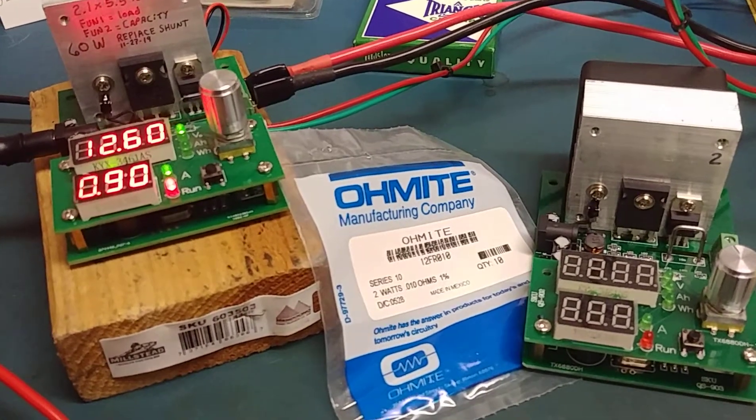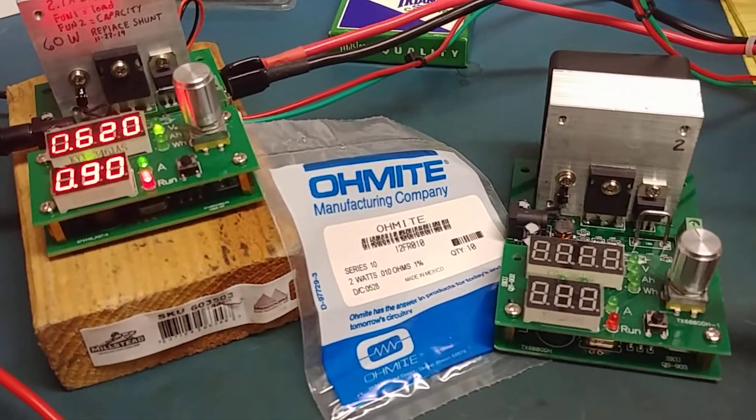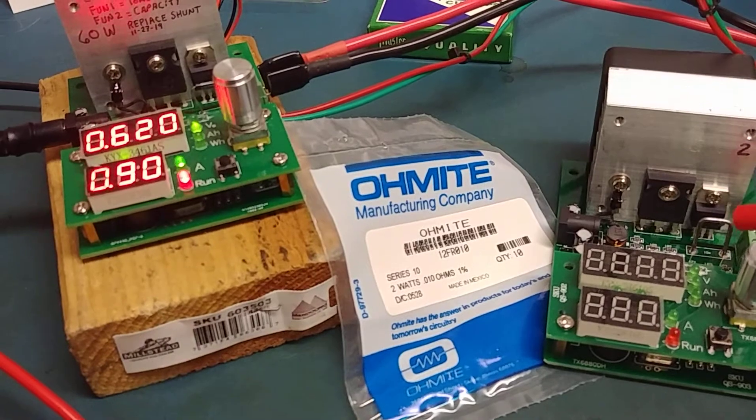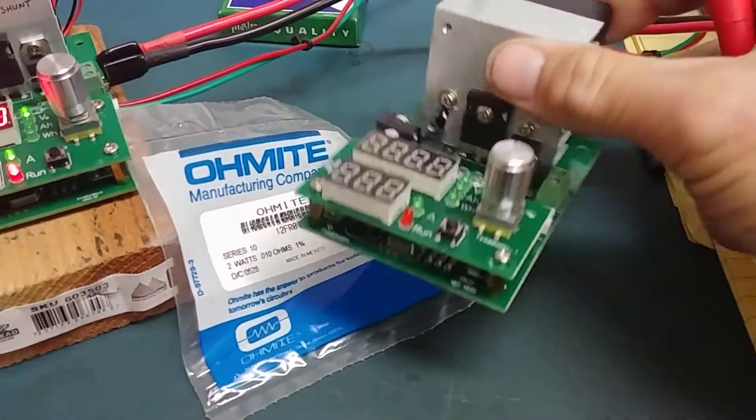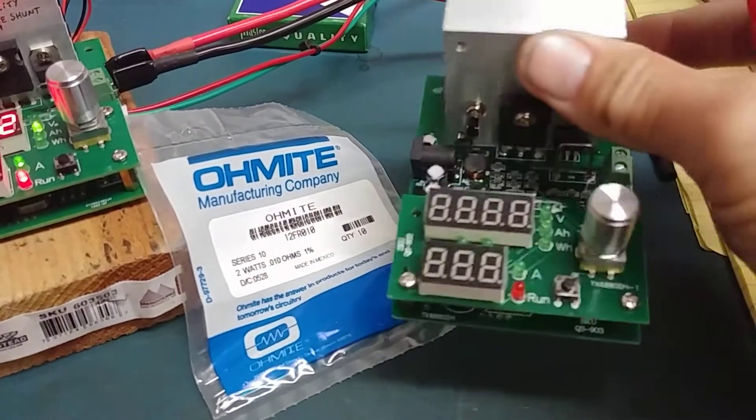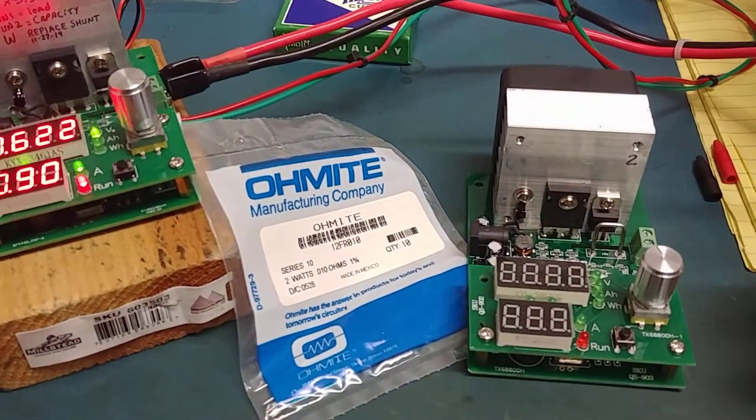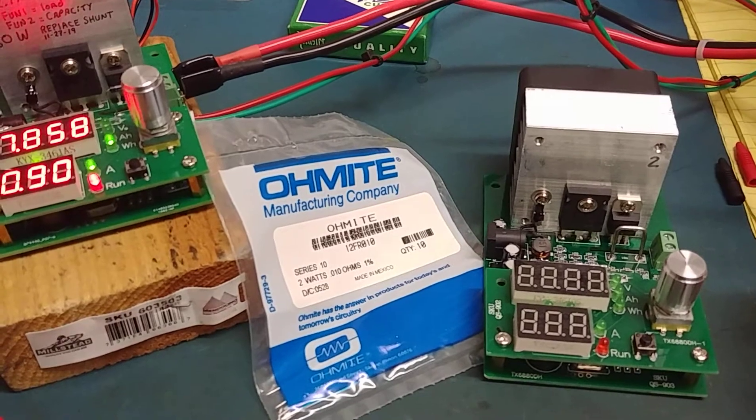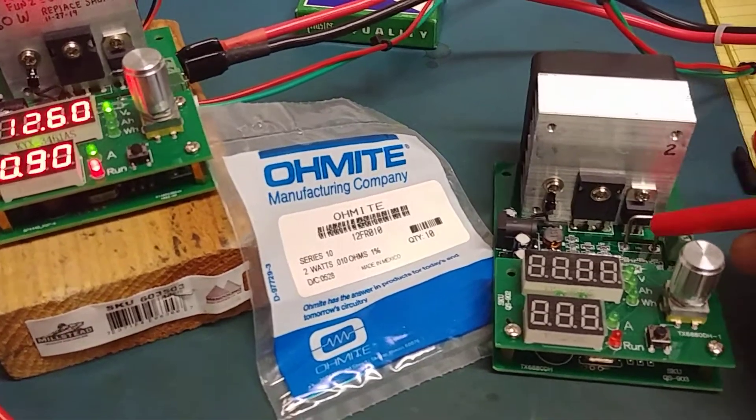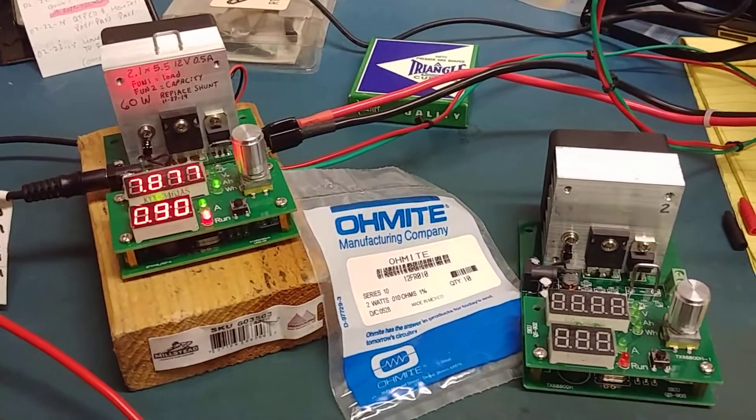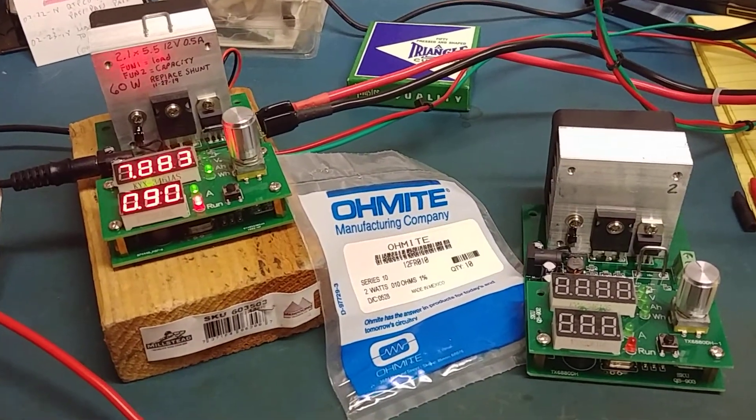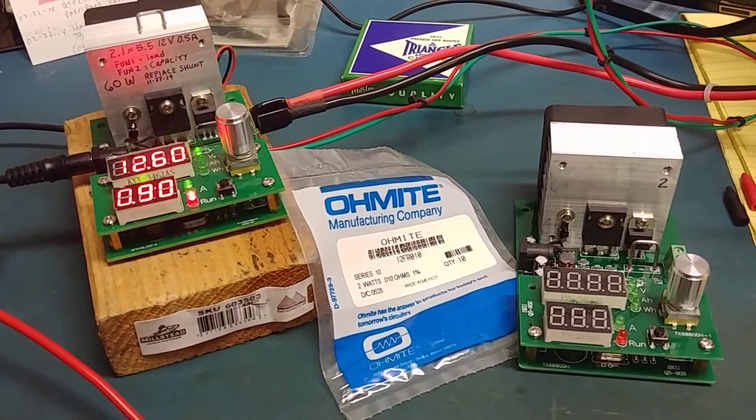I hope that this helps some of you guys that have this same battery tester and maybe have wondered why the heck the current draw was slightly off. Well, it's because of that current shunt right there. I'll see you guys with something new on the next video.